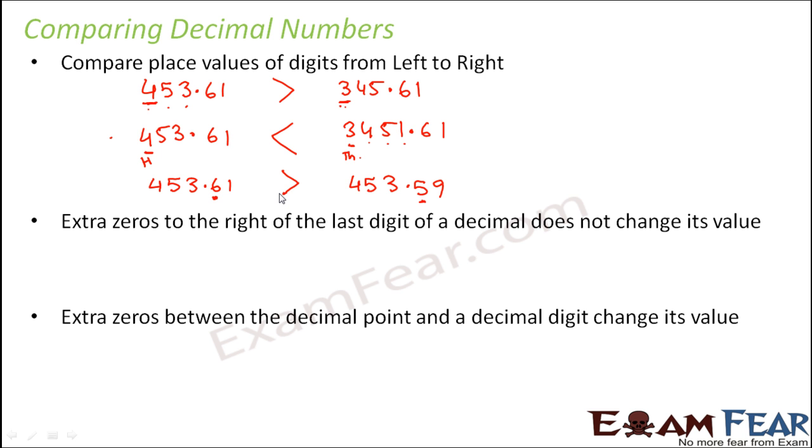So this is how you compare decimal numbers. Now, extra zeros to the right of the last digit of a decimal does not change its value. This simply means that when you write 3.5, whether you write it as 3.5 or 3.500, all of these mean the same because adding zeros at the end doesn't make any sense. But if you add 0 after the decimal point but before 5, then that would make a huge difference. But as long as you're adding zeros at the end, that doesn't really make any difference for decimal numbers.